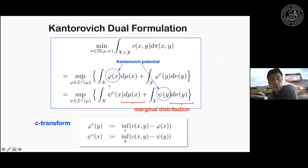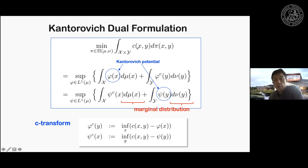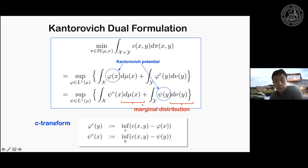Another advantage of the Kantorovich formulation is it allows a very important dual formulation. The original optimal transport problem minimizes over the joint distribution. The dual formulation introduces so-called Kantorovich potentials and tries to maximize with respect to these potentials. The advantage is that the original problem optimizes over the joint distribution, but the dual optimizes over the marginal distance — this is easier to solve. An important element here is the so-called c-transform, which I will revisit later.